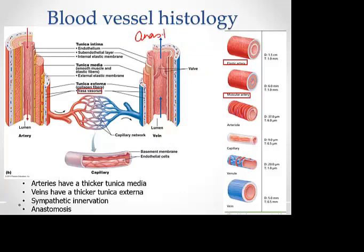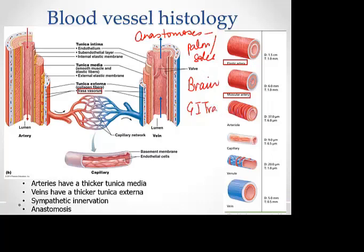Anastomoses are seen commonly in the palms and soles, in the brain — where there is an arterial circle called the circle of Willis — and in the gastrointestinal tract, among other important areas. They are important because they help re-route blood supply if one part of an artery is blocked. Venous anastomoses tend to vary from person to person and are not always typical, unlike arterial anastomoses.